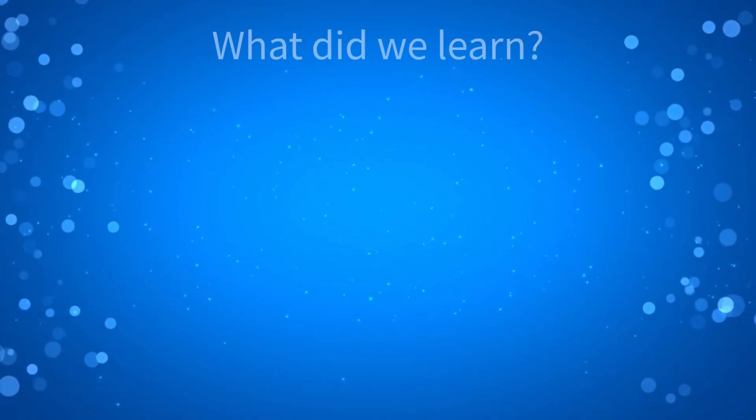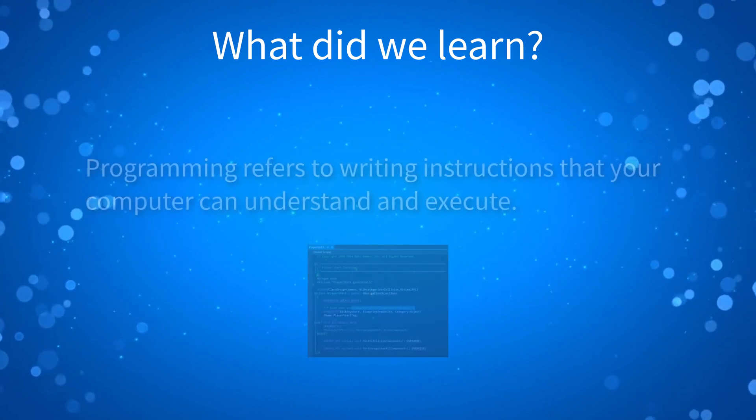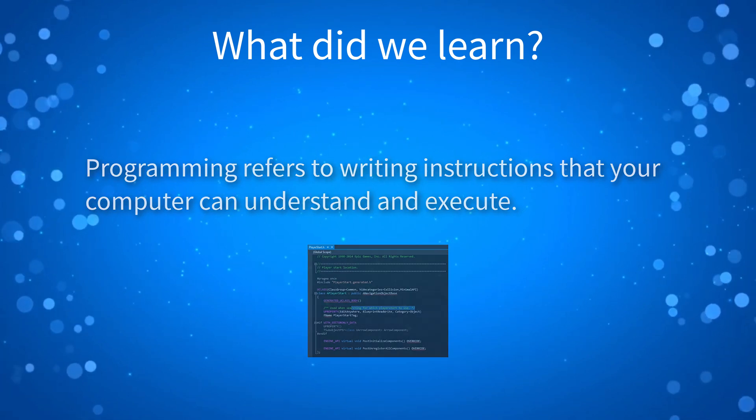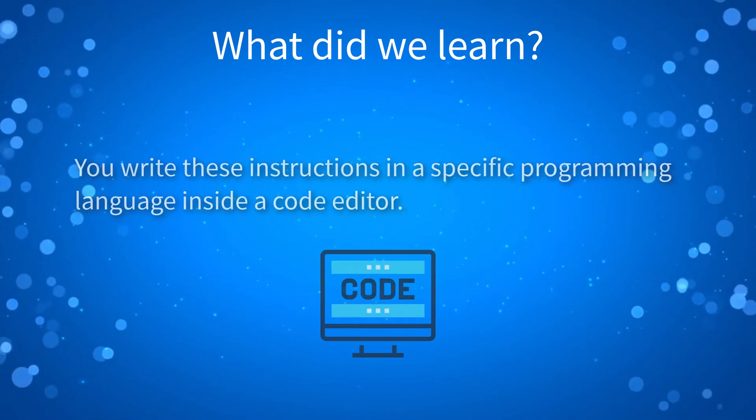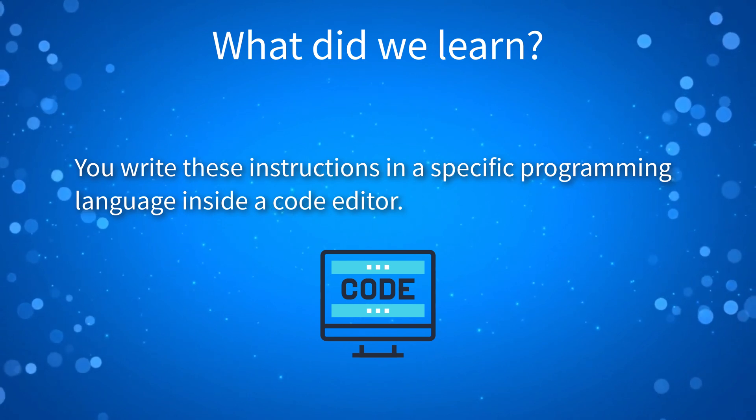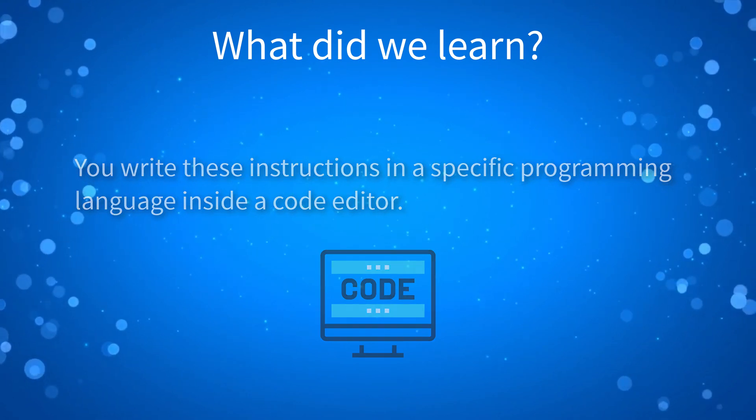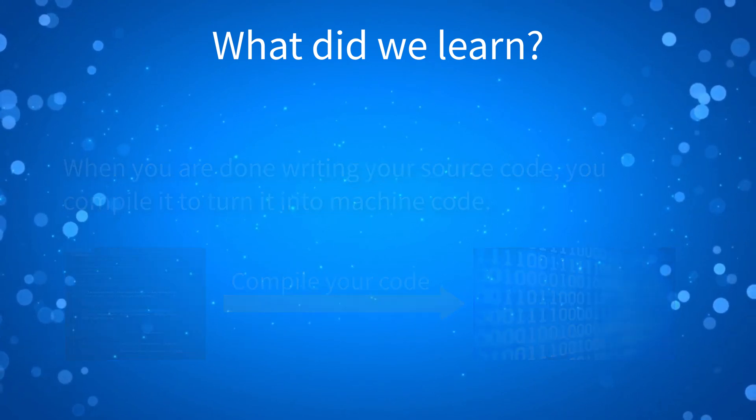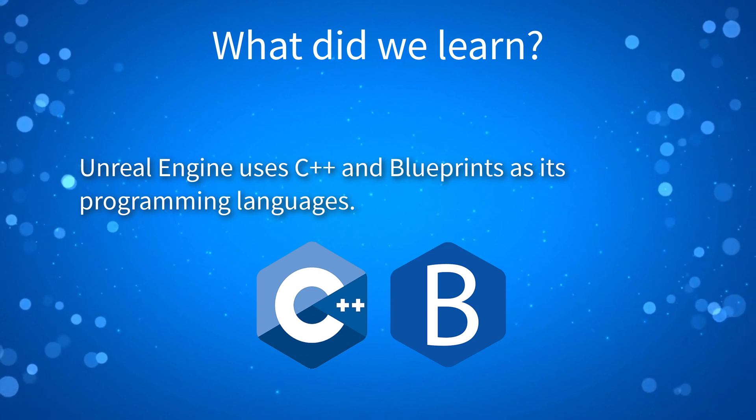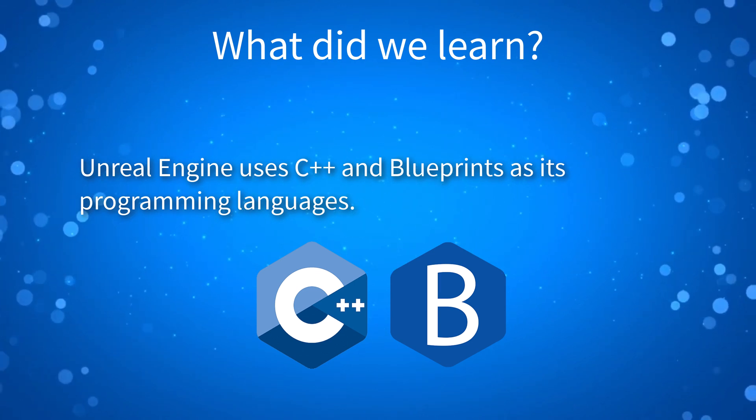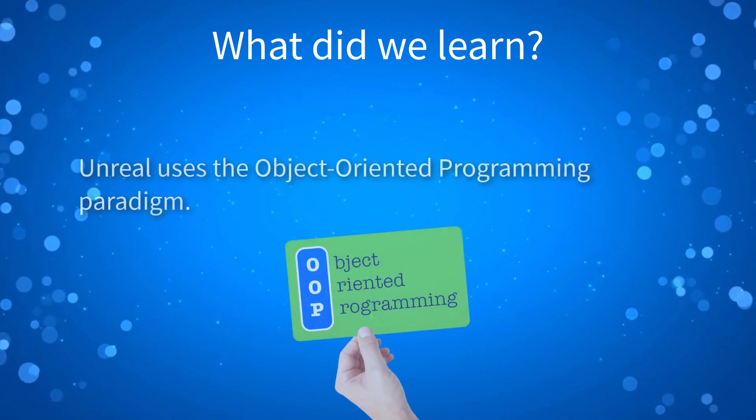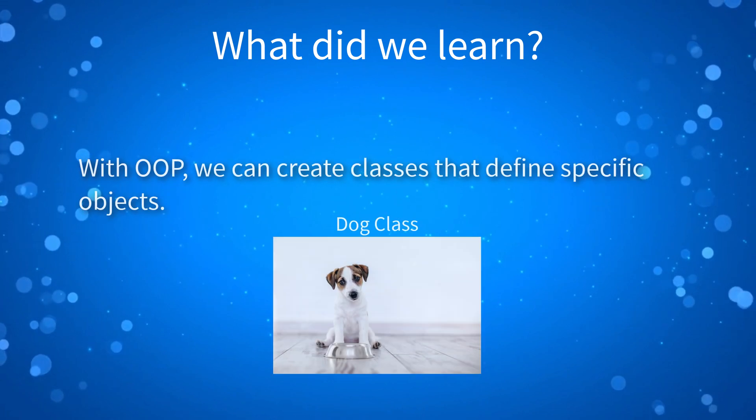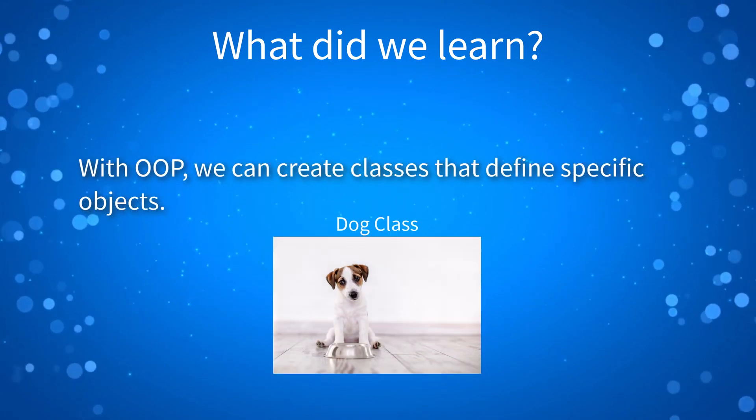Let's do a quick recap. Programming refers to writing instructions that your computer can understand and execute. You write these instructions in a specific programming language inside a code editor. When you are done writing your source code, you compile it to turn it into machine code.